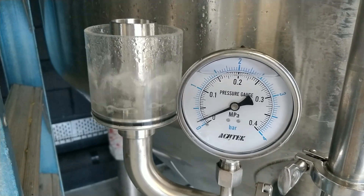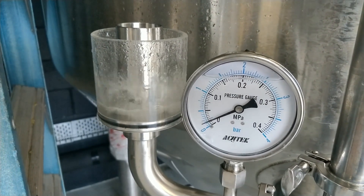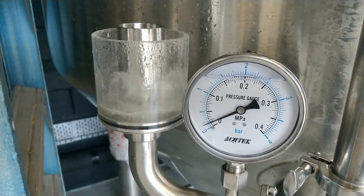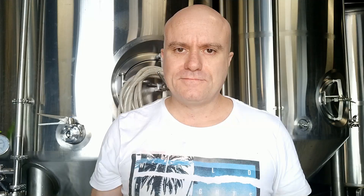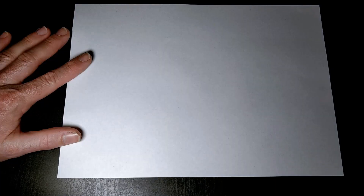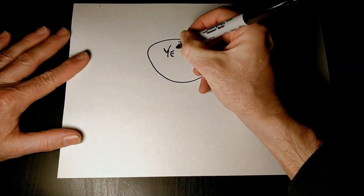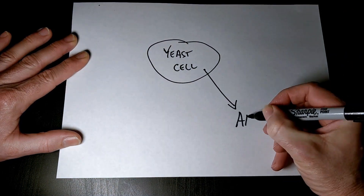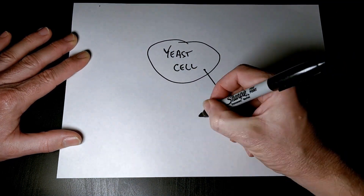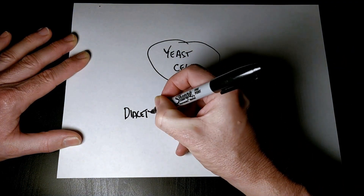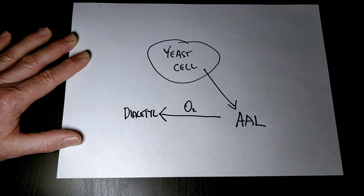In order to show you how this test works you need to understand a little bit of what's going on with the yeast at the microbiological level. During fermentation all yeast create a diacetyl precursor called acetyl oxylactate — I'm just going to call it AAL. AAL is excreted by the yeast cells into the beer, and once the AAL is in the beer it then oxidizes and forms diacetyl.